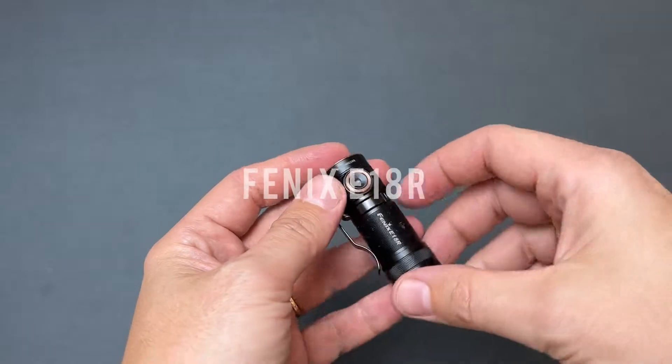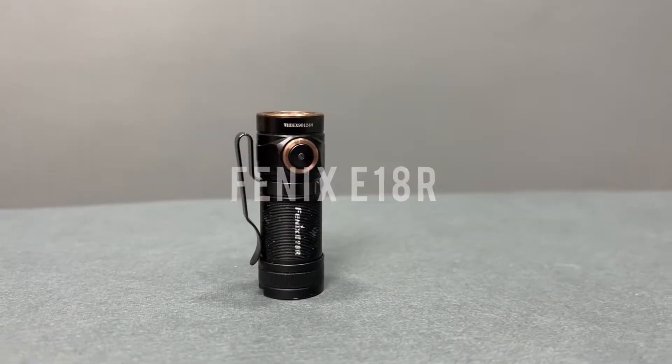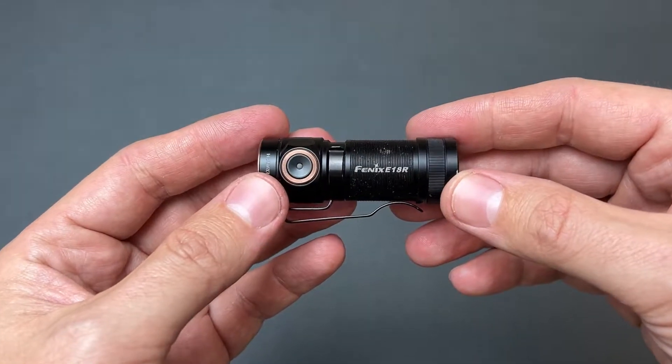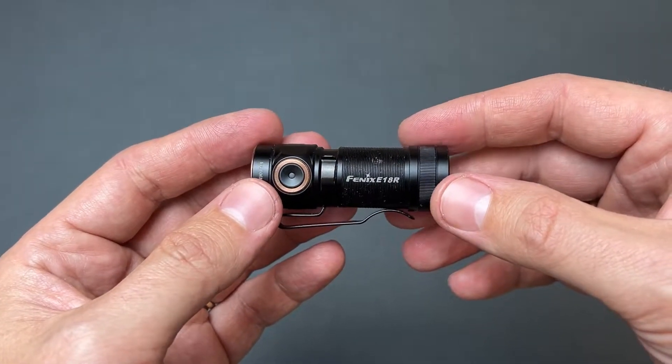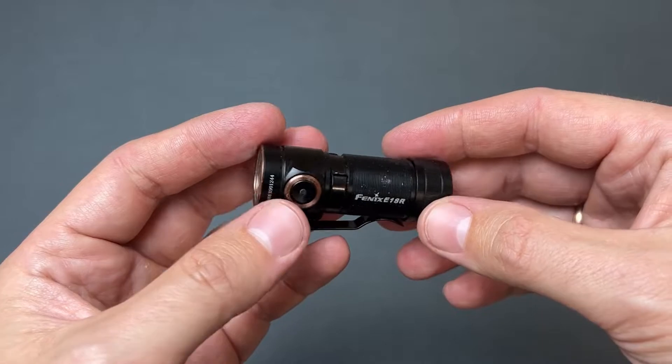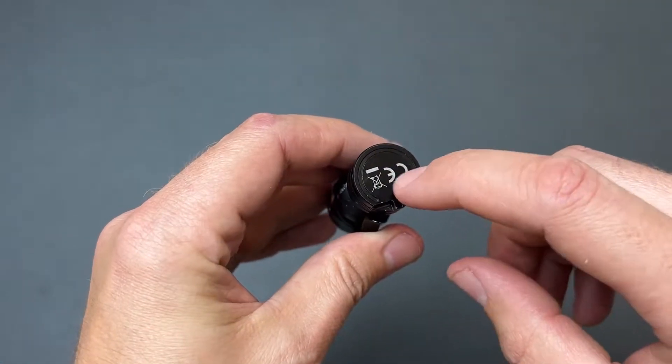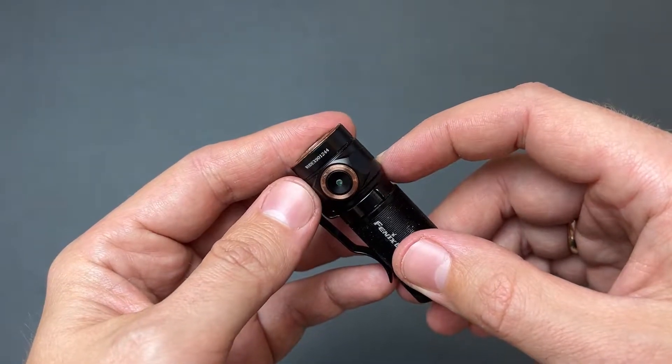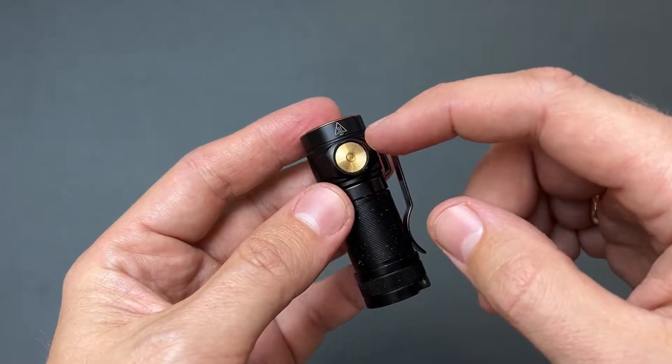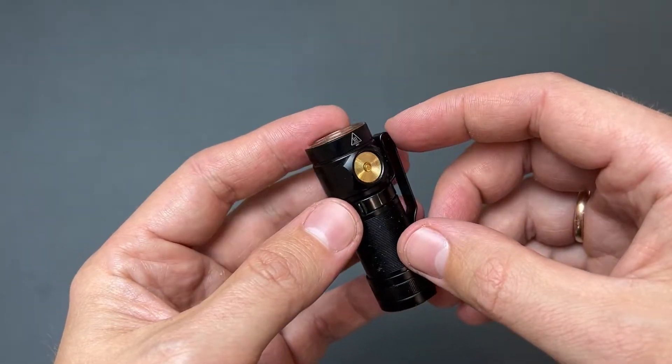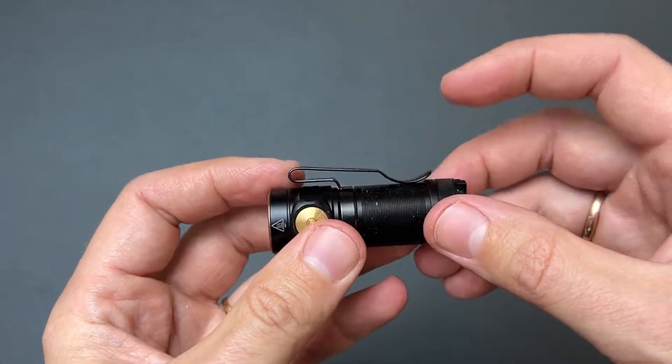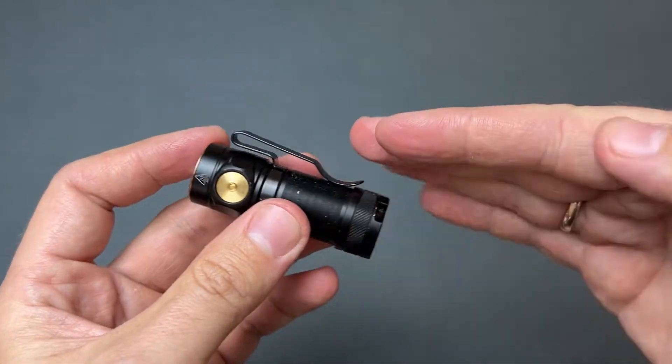Let's talk about the flashlight I carry. This is a small EDC flashlight made by Fenix. The model is called E18R. It has a magnetic bottom, four modes, and magnetic charger. It also has a pocket clip which you can use to hang it on your cap.